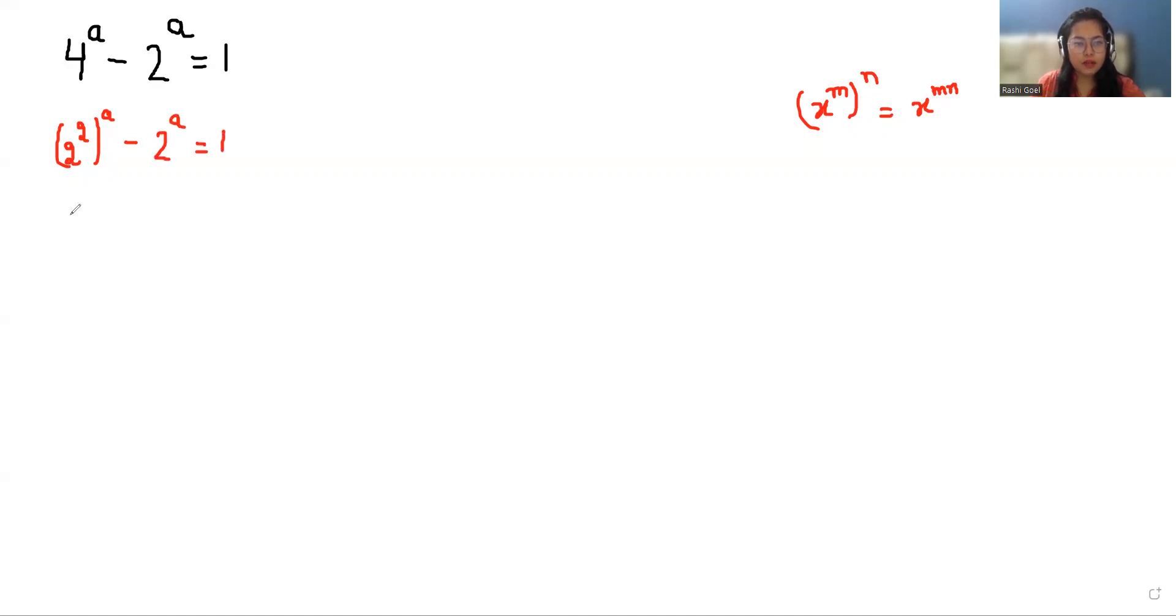By using this property again, we can write it as (2^a)^2 - 2^a = 1. Taking all the numbers together, we get (2^a)^2 - 2^a - 1 = 0.